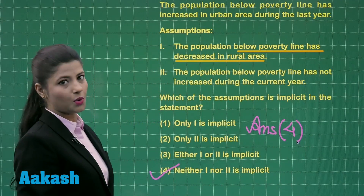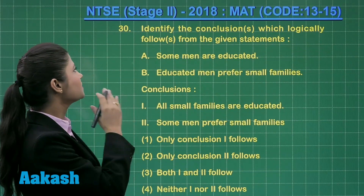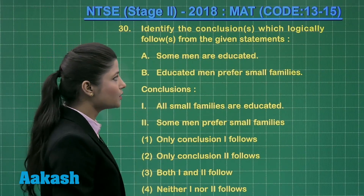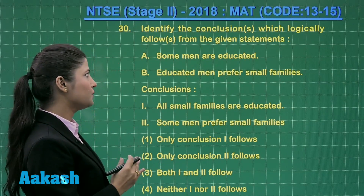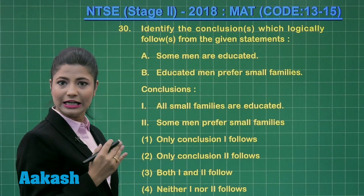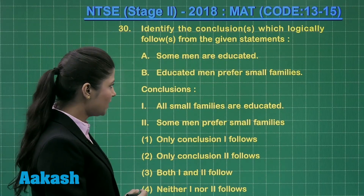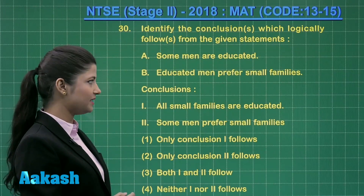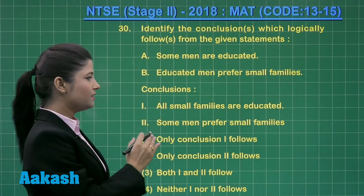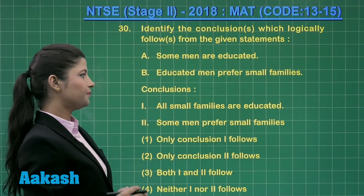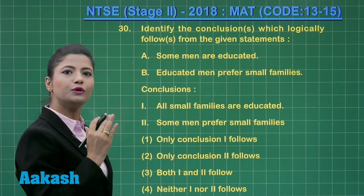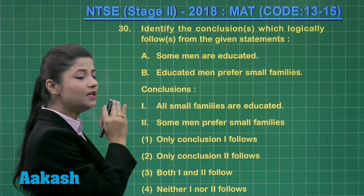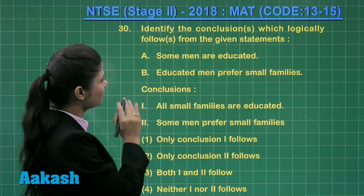Let us move on to question number 30, which is related to syllogism. It states: identify the conclusions which logically follow from the given statements. The first statement is: some men are educated. The second statement is: educated men prefer small families. Let us draw logical diagrams based on these statements to find the correct conclusion.